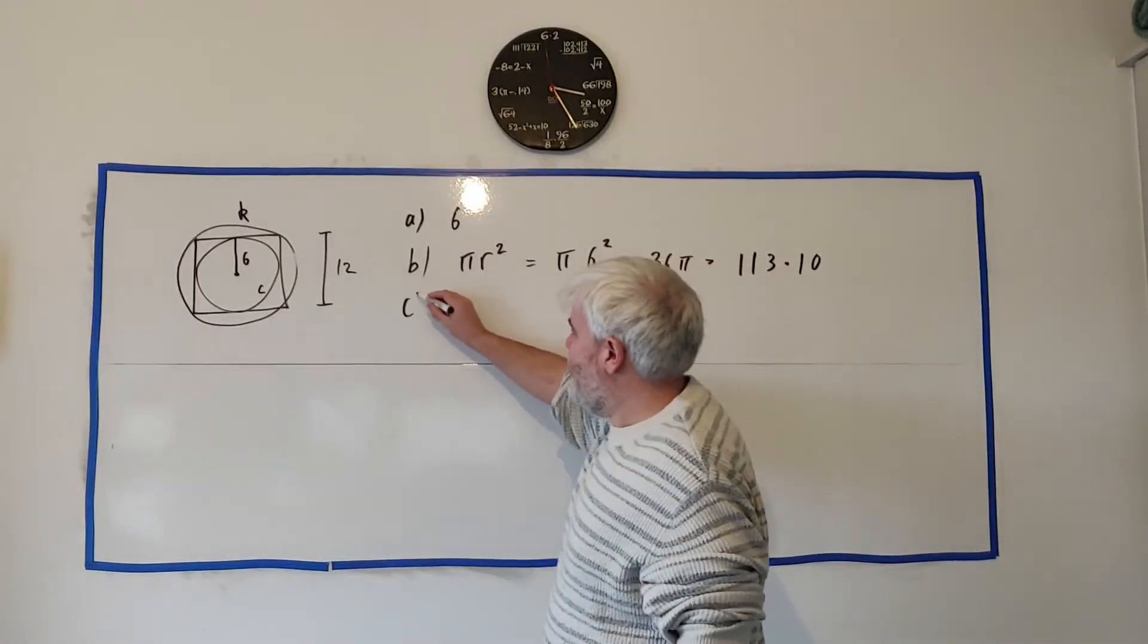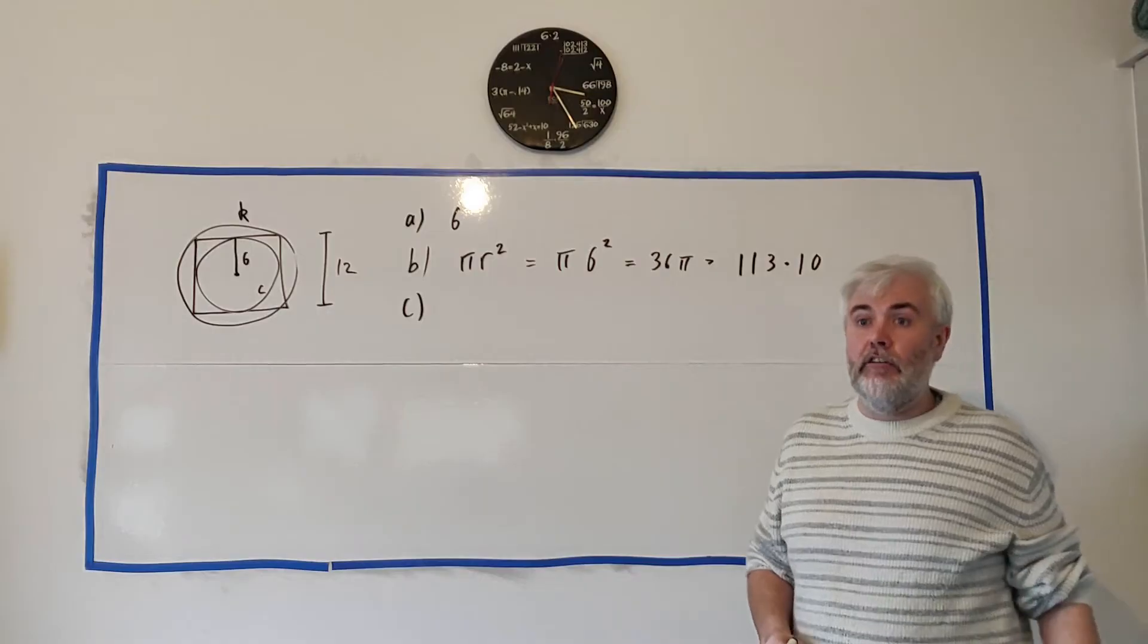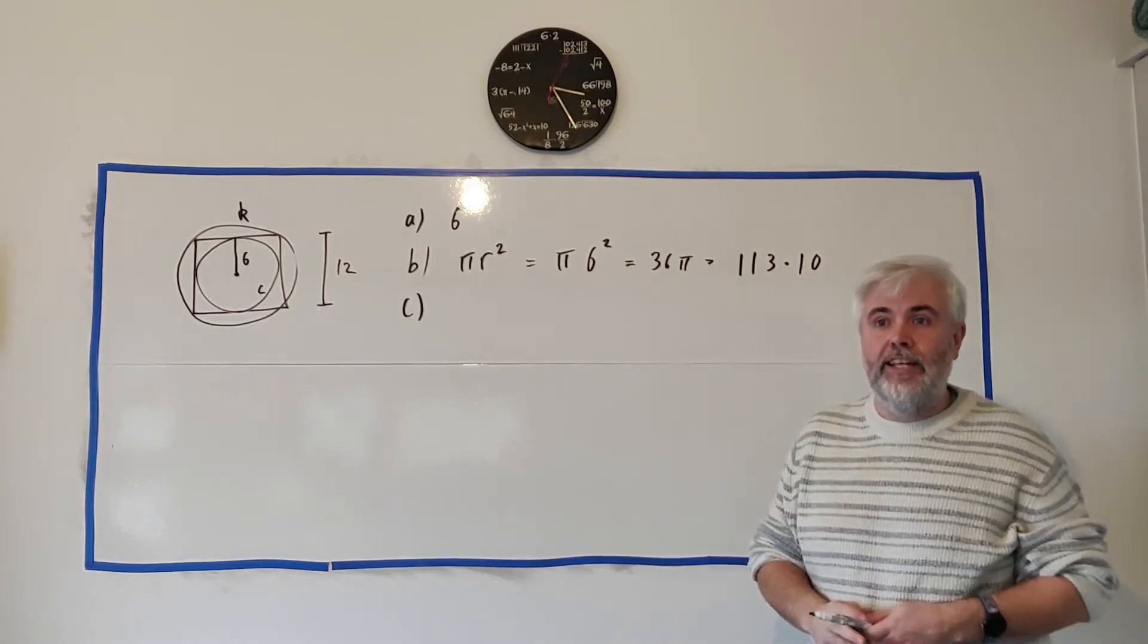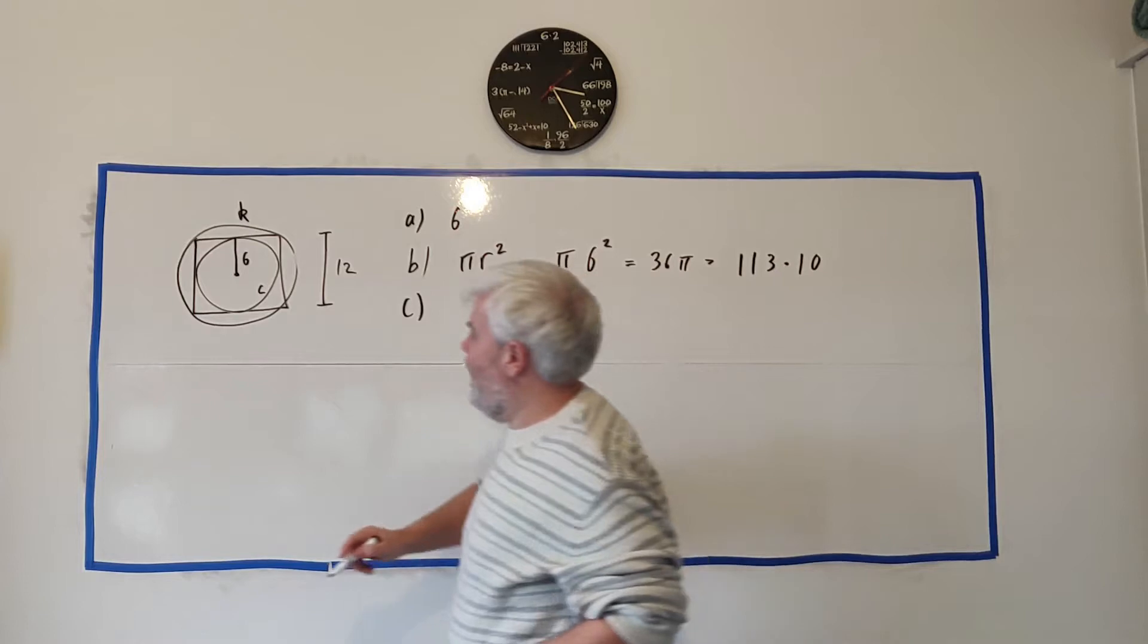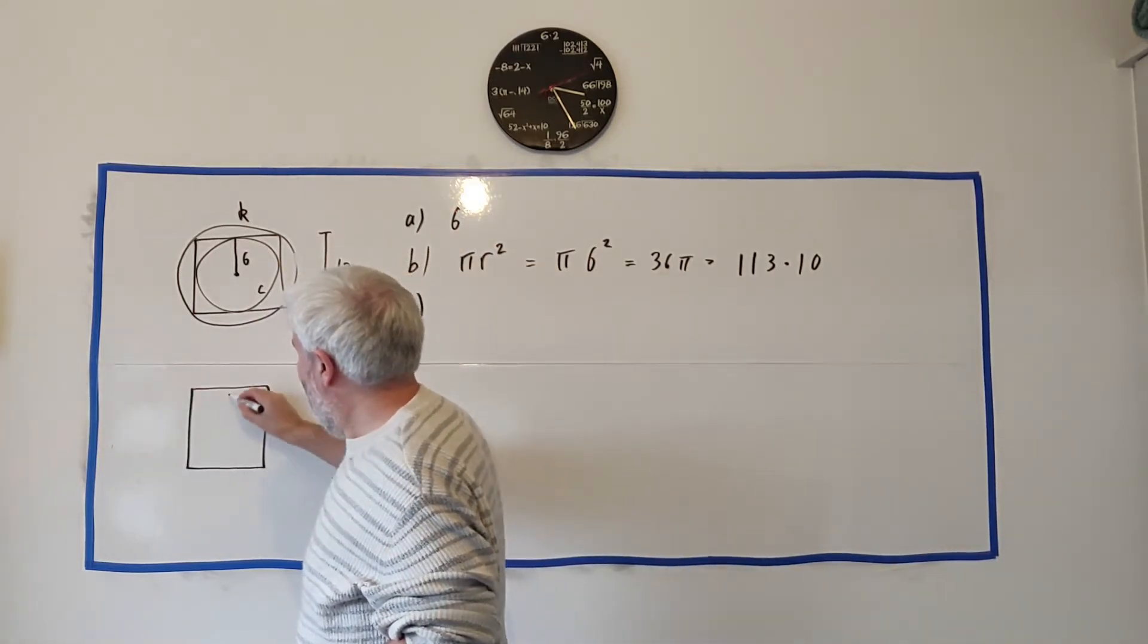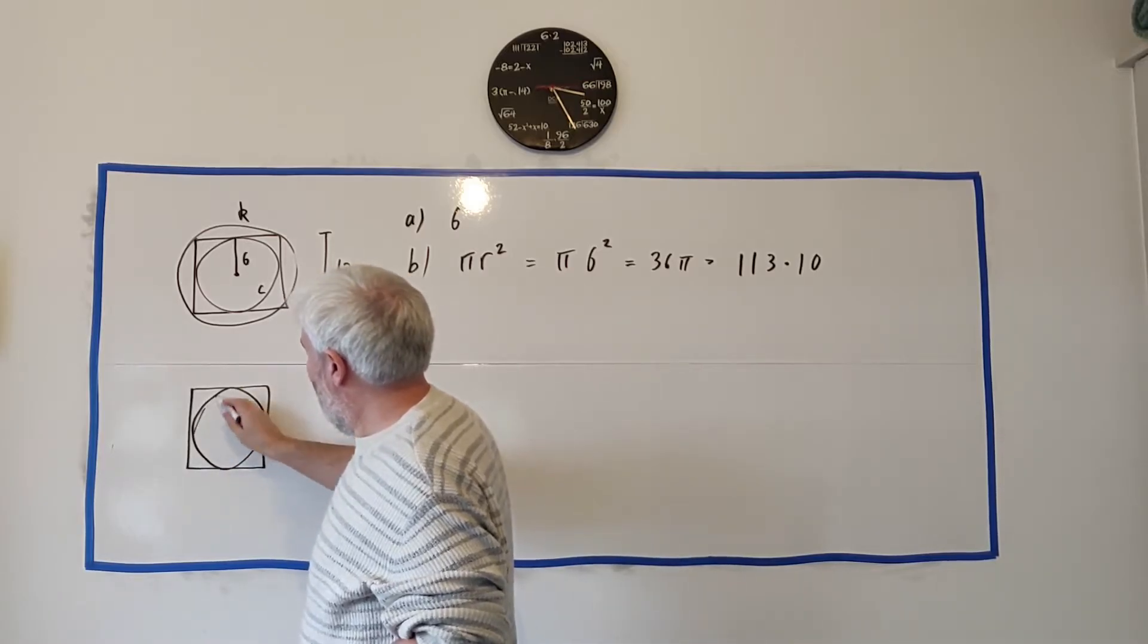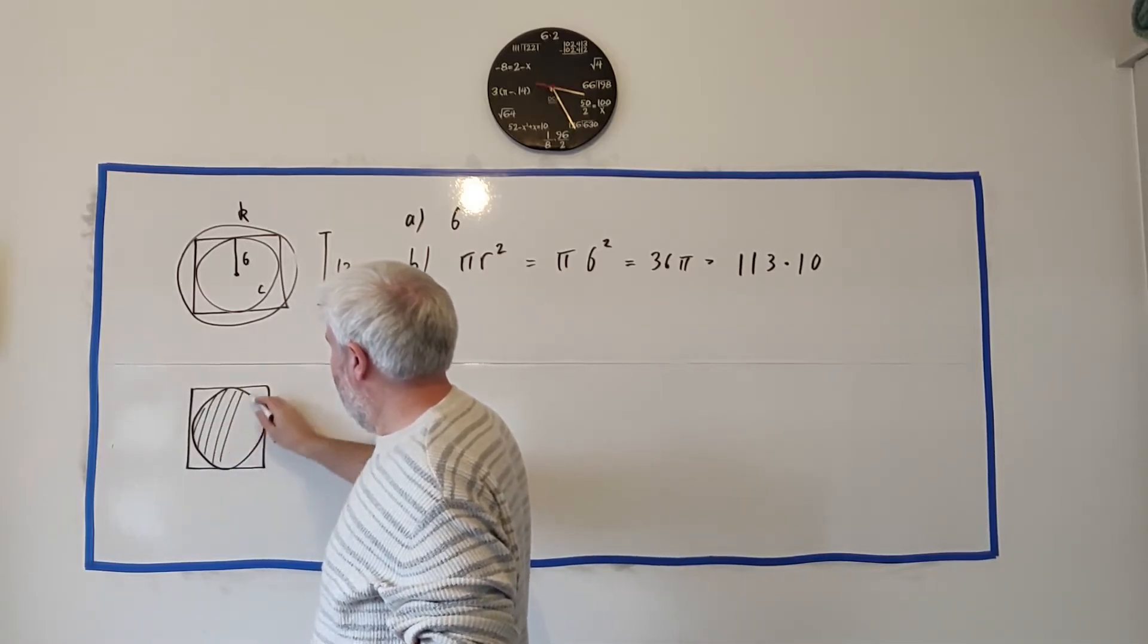Okay for part C they ask us to work out the percentage of the area of the square that is taken up by the circle C. Let me draw it again without the outer circle. It's just the square and the inner circle and they're saying what percentage of that area is the inner circle.